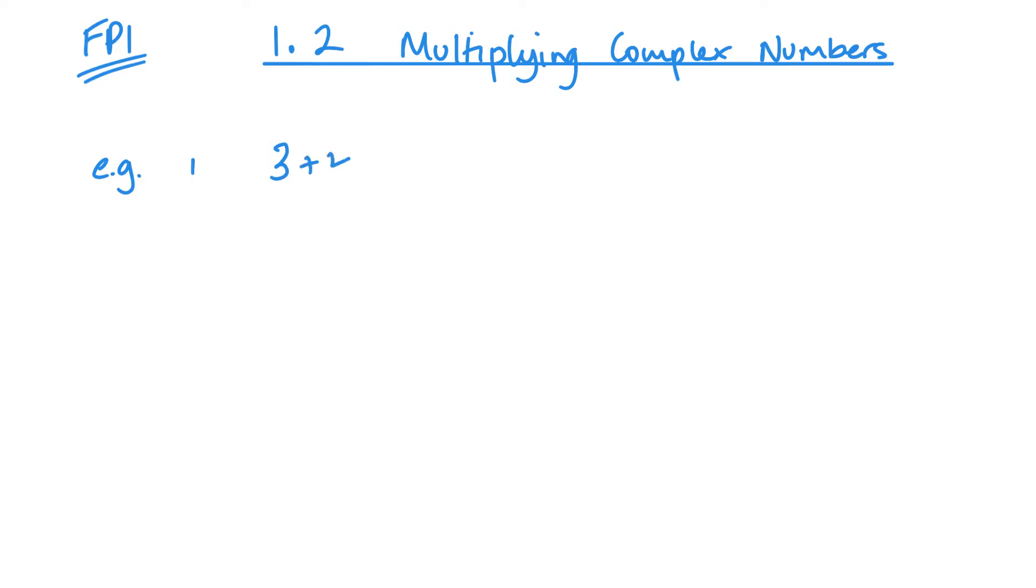So let's start with an example: 3 plus 4i, let's multiply that by another complex number, 2 plus 5i. So you want to expand this bracket as you would normally expand it, so 3 times 2 is 6...